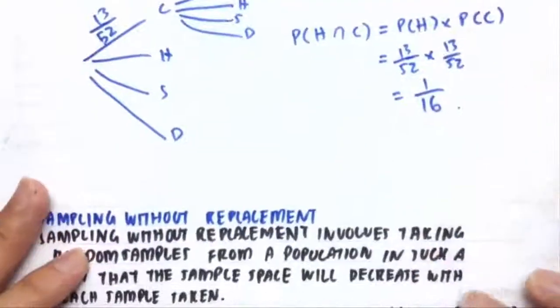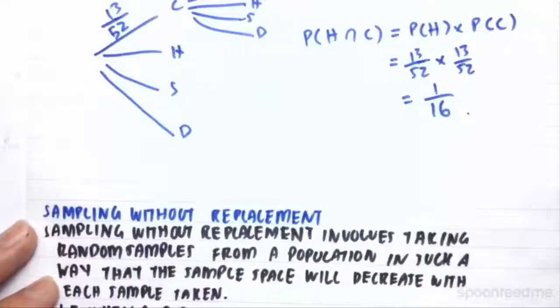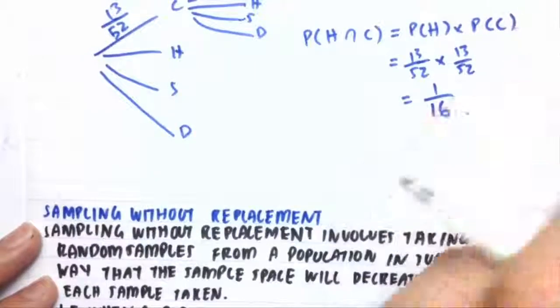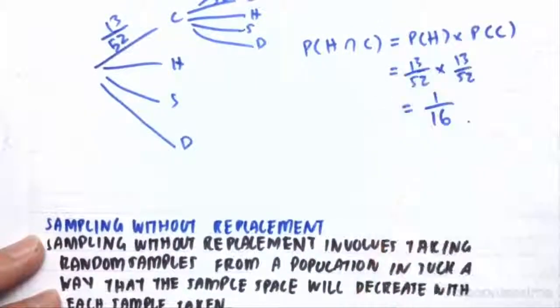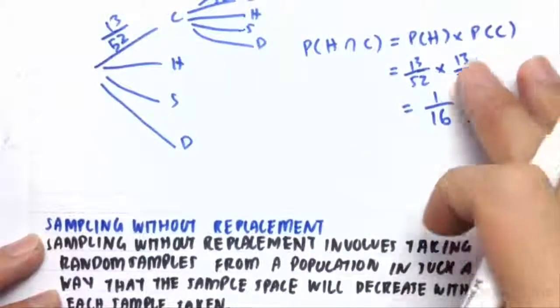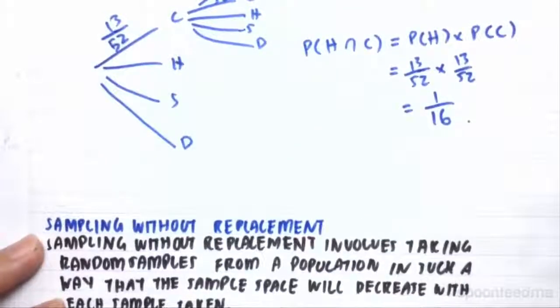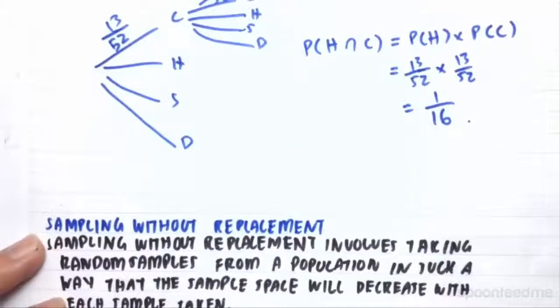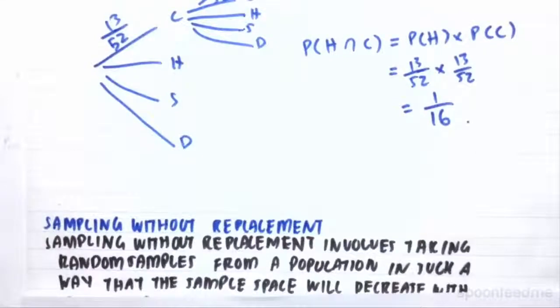Now sampling without replacement is the opposite. So instead of drawing that heart and then putting it back, we actually draw that heart and keep that heart. So as a result, the sample space or the number of cards that we can actually draw is lowered, so it reduces by 1. So then, for our next draw, there are only 51 cards to pick from and 12 hearts to pick from.